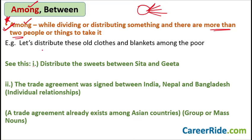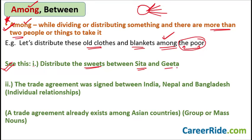'Let us distribute these old clothes and blankets among the poor' — there are many people to take it, more than two, so we use 'among.' But 'Distribute the sweets between Sita and Gita' — there are only two takers: Sita and Gita. So 'between Sita and Gita.' Now there's an exception — 'The trade agreement was signed between India, Nepal and Bangladesh.' There are three countries involved, yet I'm still using 'between.' Why? Because here we are talking about individual relationships.